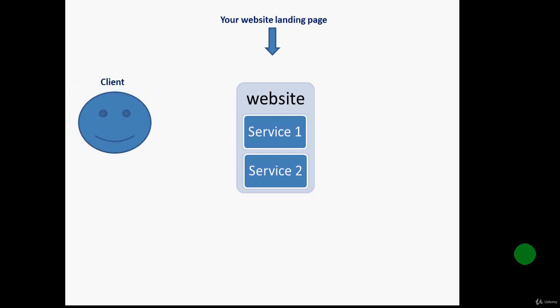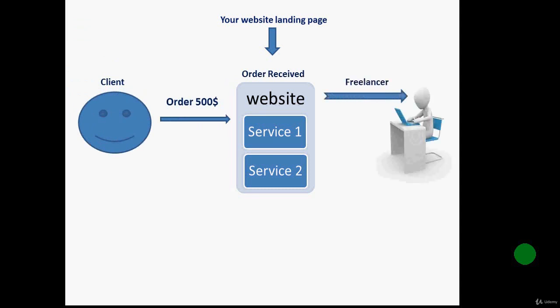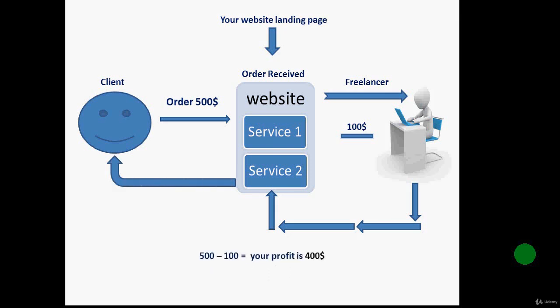When a client lands on your website and orders a service — let's say a $500 service — after receiving the order you take the order details and send it to a freelancer on freelancing websites like Fiverr.com, Upwork.com, or Freelancer.com. The freelancer does the job for, let's say, $100. After completing the project, the freelancer sends it to you and you forward it to your customer. You pay $100 to your freelancer and the remaining $400 is your profit. This is how simple drop servicing is — you work as an intermediary between clients and service providers.